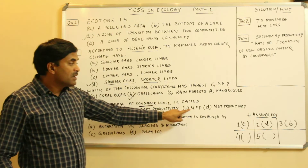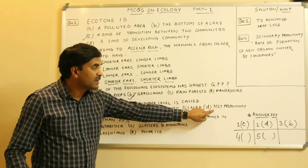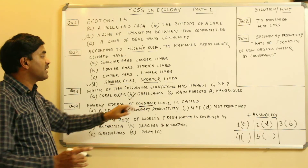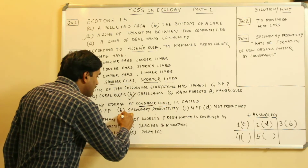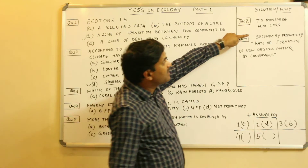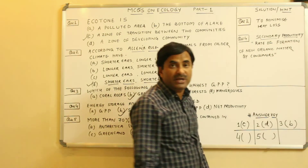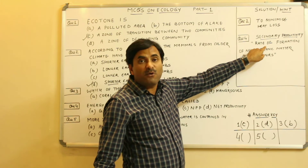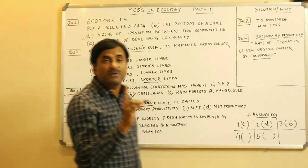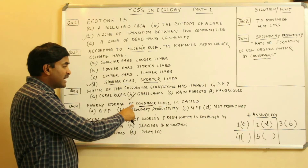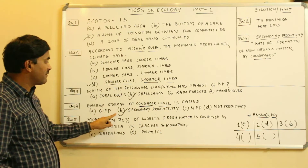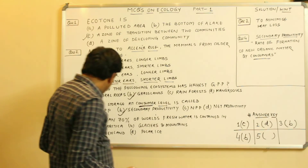Question number four asks: energy storage at the consumer level is called what? The answer is secondary productivity — option B. Secondary productivity is defined as the rate of formation of new organic matter by consumers. So energy storage at the consumer level is of course secondary productivity. Question number four has the answer B.